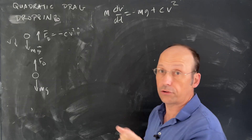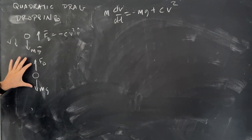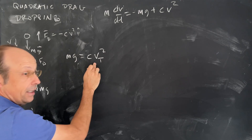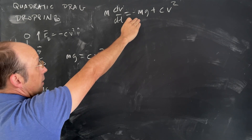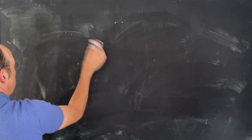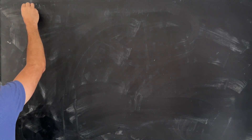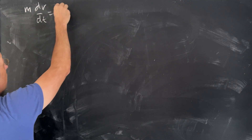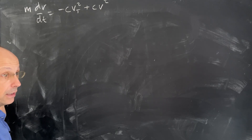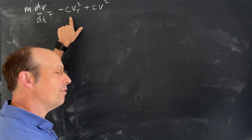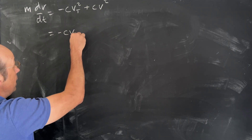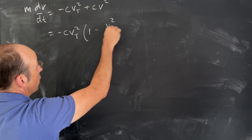Now this is a difficult thing to deal with, so we're going to use a trick — the same trick we used before — terminal velocity. At terminal velocity, the drag force and the gravitational force are the same, so mg equals cv_t squared, where v_t is the terminal velocity. That's the maximum it could be. So up here I can write mg as negative cv_t squared. So I have m dv/dt equals negative cv_t squared — that's the gravitational force — plus cv squared. I'm going to factor out cv_t squared, so this is going to be negative cv_t squared times (1 minus v squared over v_t squared).